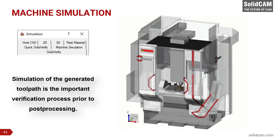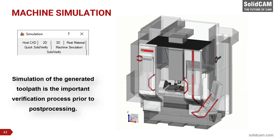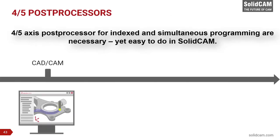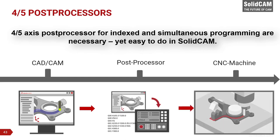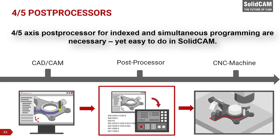Advanced simulation allows the SolidCAM user to visualize and verify all program toolpaths quickly and efficiently, reducing the risk of gouging the workpiece or crashing the machine. Machine simulation gives the user the ability to simulate a full representation of their machine with devices and tools set up in a 3D environment, verifying all toolpaths exactly as they would run before post-processing begins. An advanced 4- or 5-axis post-processor configured to the machine is required for both indexial and simultaneous machining, and such post-processors are easy to configure with SolidCAM.